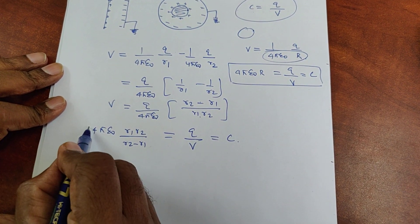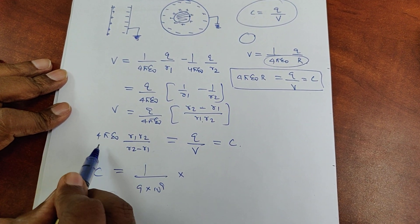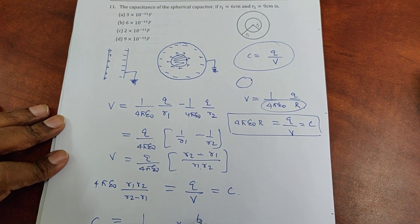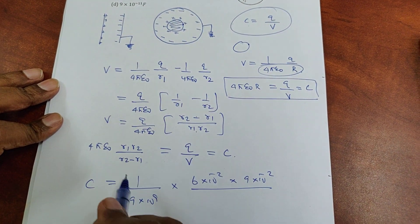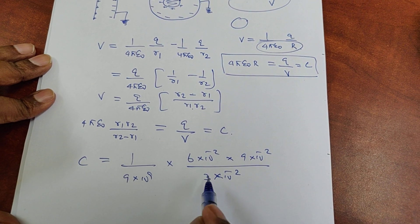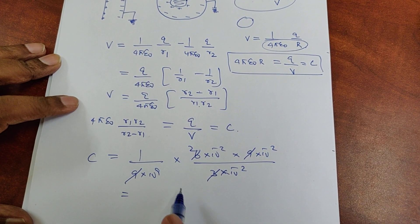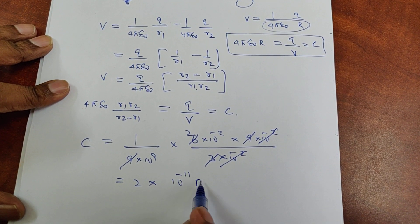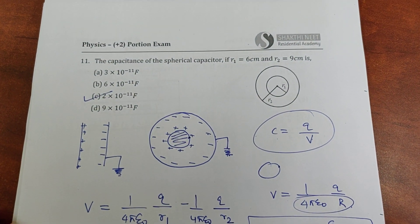Now let us calculate. 4πε₀ = 1/(9×10⁹). The inner radius r₁ = 6 cm and outer radius r₂ = 9 cm. The difference r₂ − r₁ = 3 cm. After cancellation, the answer comes to 2×10⁻¹¹ farad. The third option is the correct answer.